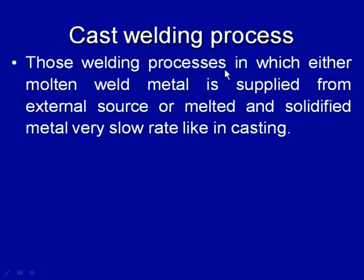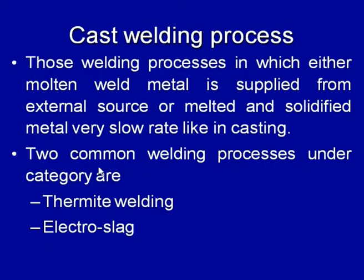We will see in greater detail the broad classification of welding processes under four categories: cast welding processes, resistance welding processes, solid state welding processes, and fusion welding processes. Cast welding processes are those in which either molten weld metal is supplied from an external source, or it is melted and solidified between the components to be joined at a very slow rate, similar to casting. Under this category, we have thermite welding and electroslag welding.